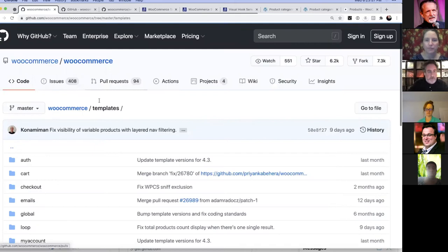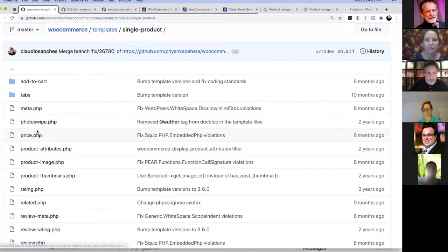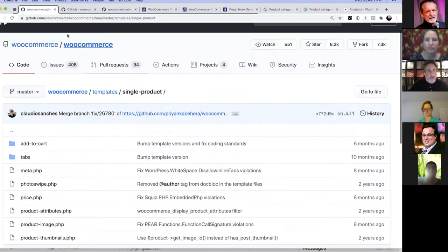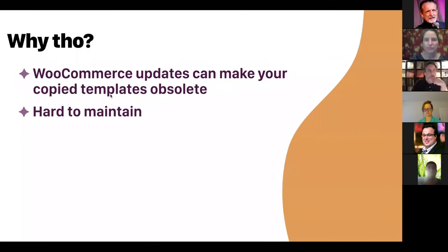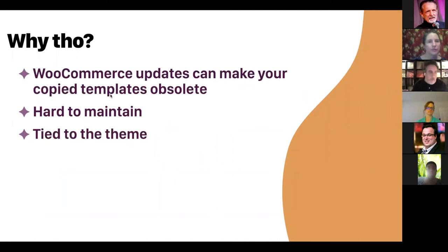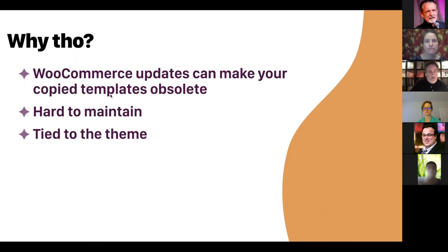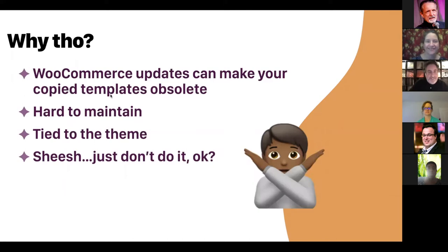In my experience, WooCommerce template updates happen maybe two to three times a year. So if you're copying all of these files and you've made customizations — say even just for a single product — you have to copy all your custom code back over. That obviously is a pain. Also, these customizations are tied to your theme. I'm of the plugin school, so that's what I'm going to go with today. If you have customizations in a plugin and you want to use a new theme, you don't have to copy all these files over. So just don't use the copy templates method — there is a better way.